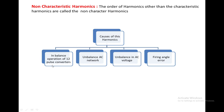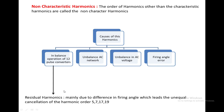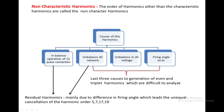Imbalanced operation of a 12-pulse converter means there is a difference in the firing angle of the two converters, which leads to unequal cancellation of harmonics of orders 5, 7, 17, and 19, so these remaining harmonics are nothing but residual harmonics. These residual harmonics are also generated due to imbalance in the network, unbalanced AC voltage, and firing angle error. Because of these three causes, harmonics are generated — specifically even harmonics and triplen harmonics, which are very difficult to analyze.